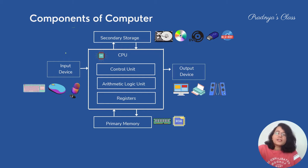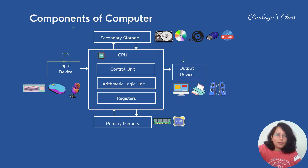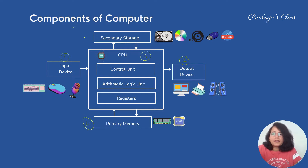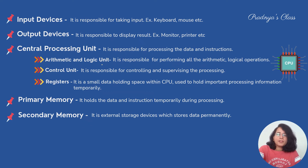From the block diagram, there are a total of five components of the computer. The first one is input device, we have output device, the next important component is CPU, and for storage we need memory — primary memory and secondary memory. Let's study the functionality of each component.